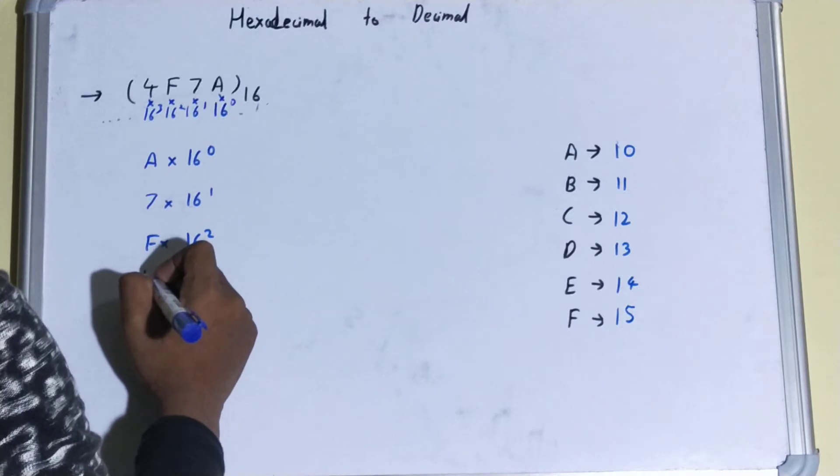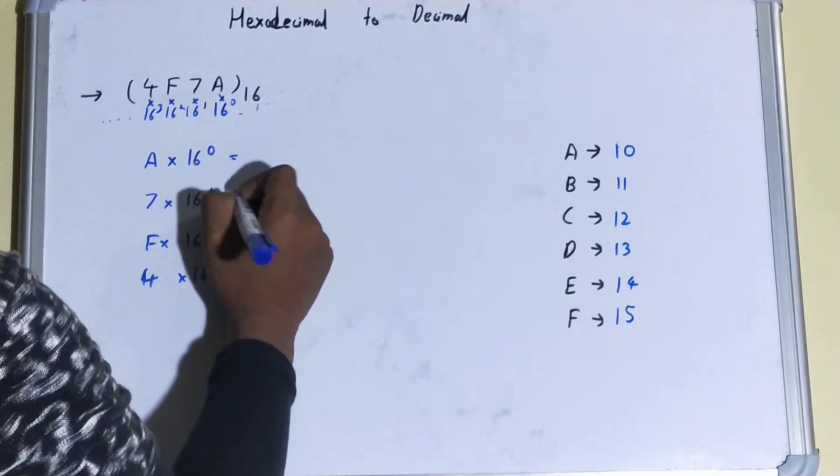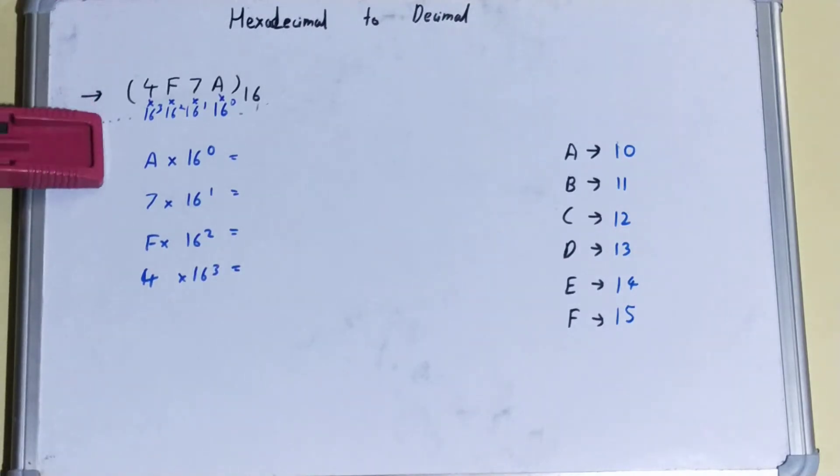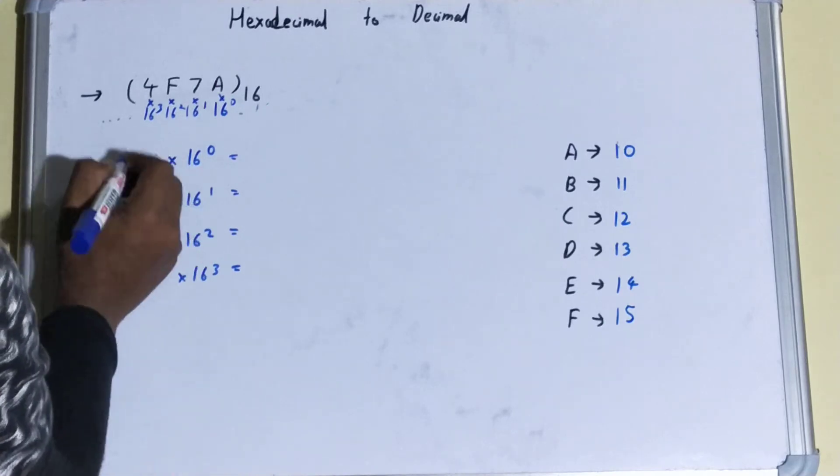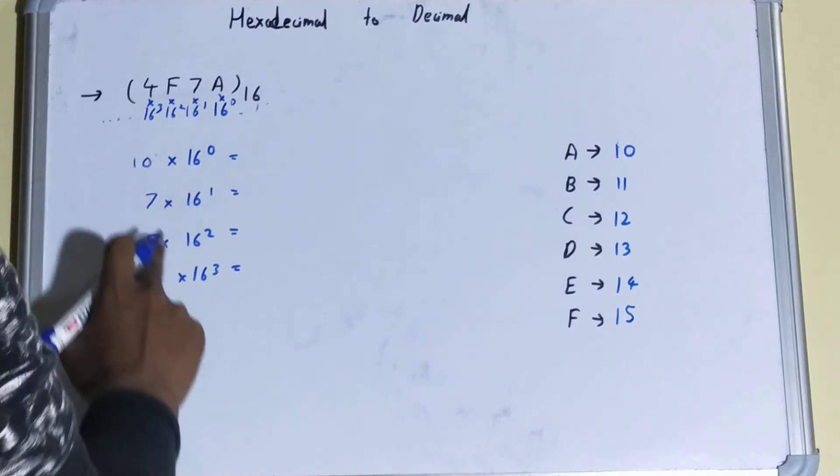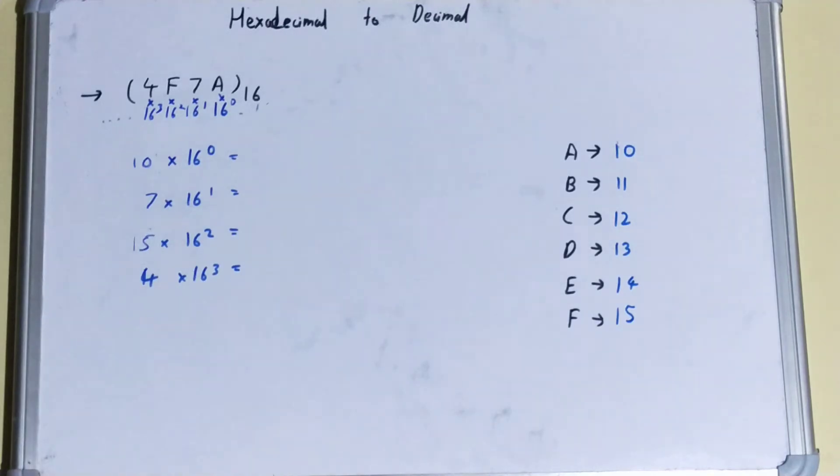So we'll just write it out. Now for A we can see from this table that it is 10, and for F it is 15. You can directly see from the table.